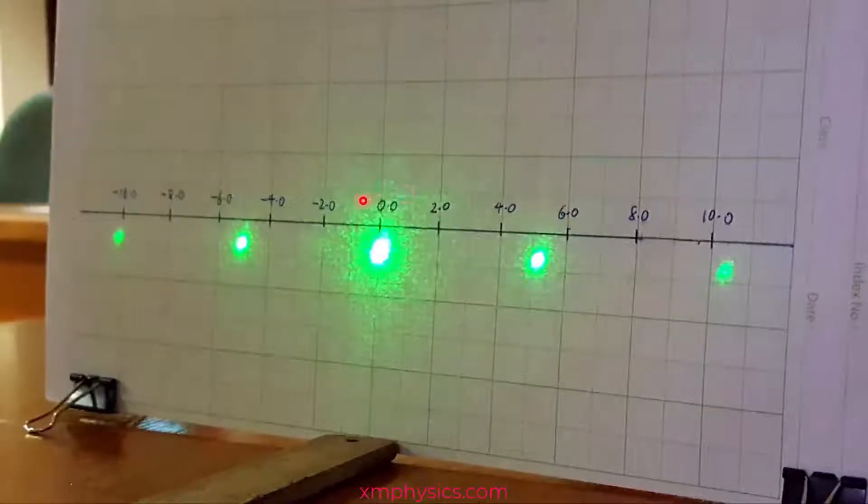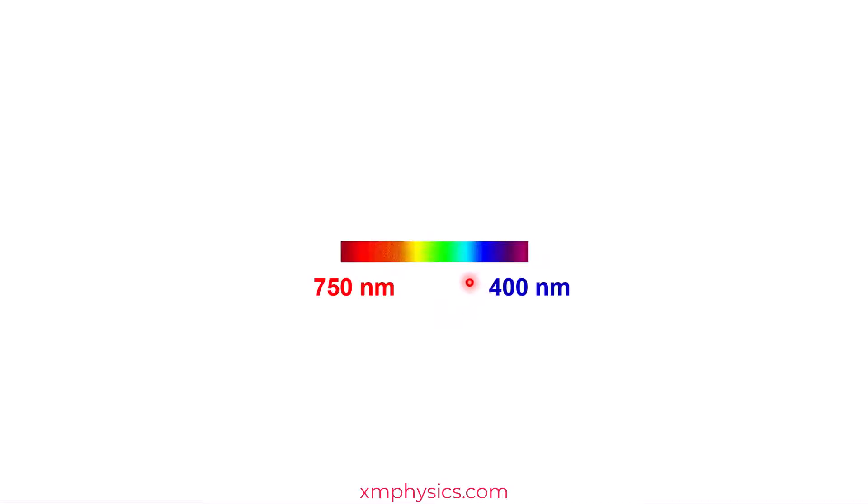So far we have been shining monochromatic light through our double slits. Have you ever wondered why we don't use white light instead? White light is not monochromatic. White light consists of the entire visible spectrum, from as short as 400 nanometers to as long as 750 nanometers.